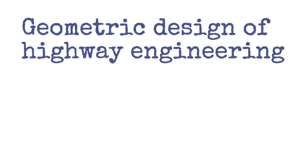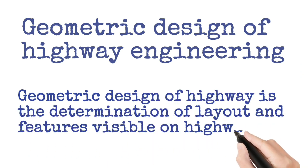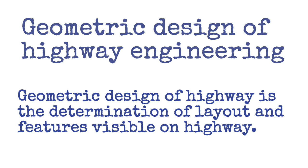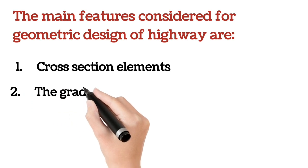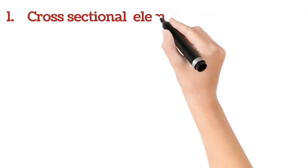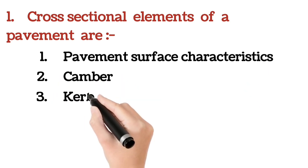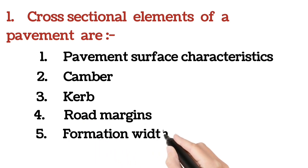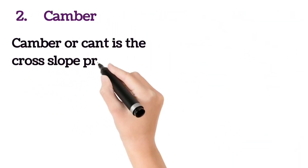Hello and welcome back to my channel. We were discussing geometric design of highway engineering. Earlier we discussed some important points of cross-sectional elements of a pavement, including pavement surface characteristics. In this video today we will discuss about camber and curb. The main features considered for geometric design of highway are cross-sectional elements, gradient, intersection, and sight distance.